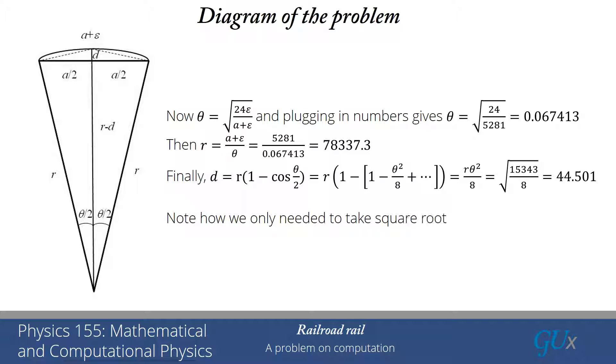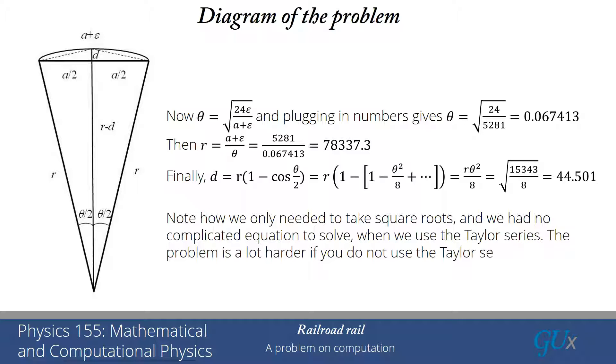Note that because we use the Taylor series expansion, I didn't have to evaluate any trig functions or solve any complicated equations. I just had to take square roots, and then the rest of it was arithmetic. This was all made possible because I recognized that with these small quantities, I can use the Taylor series expansion and truncate it at the lowest order needed to solve the problem.